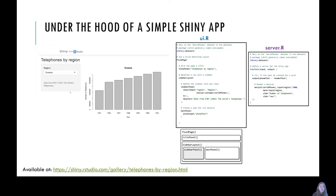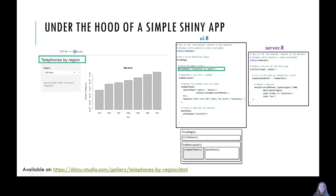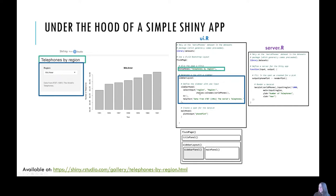I wanted to show you under the hood of a really simple Shiny app so that you understood a bit more about what's going on within these elements. This is a simple Shiny app where the user inputs a region of interest — America, Europe, Asia — and then you can see on the right hand side there's a bar plot showing the number of telephones within that region over time. Here you can see the title panel that corresponds to the title of the app. You can see the sidebar layout and, importantly, the select input option which is generating that dropdown list that the user can select an option from.